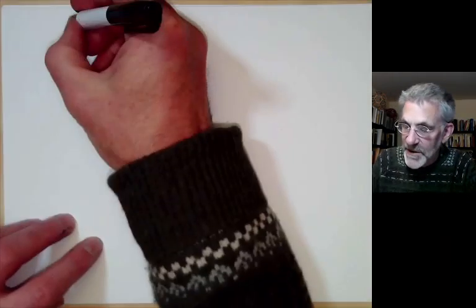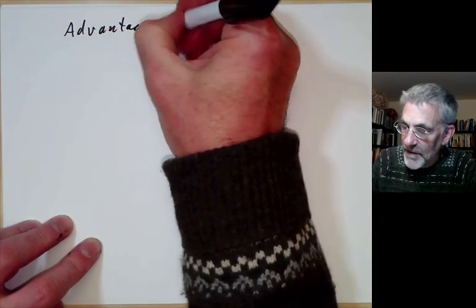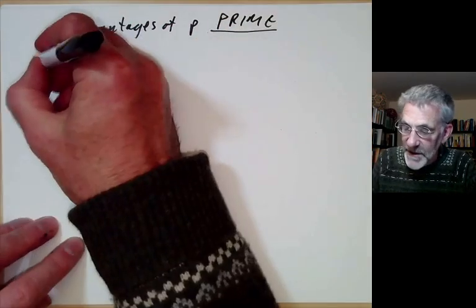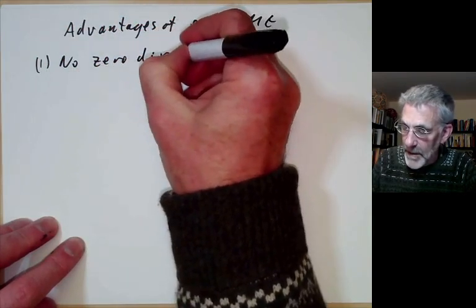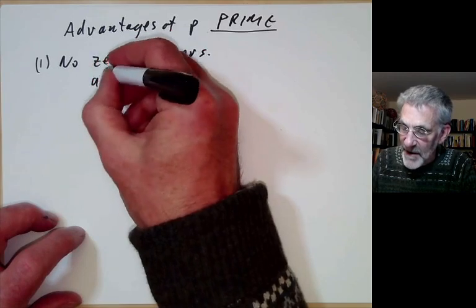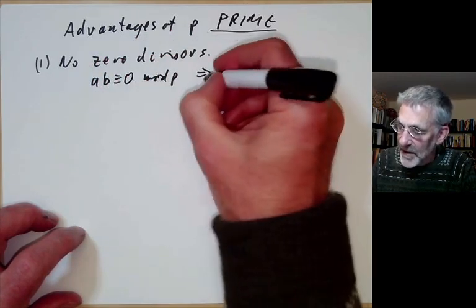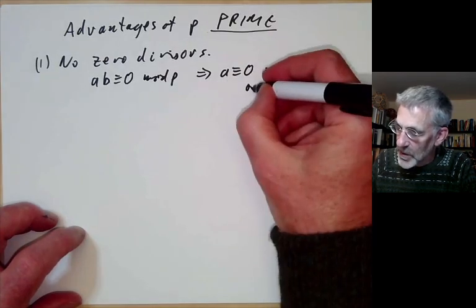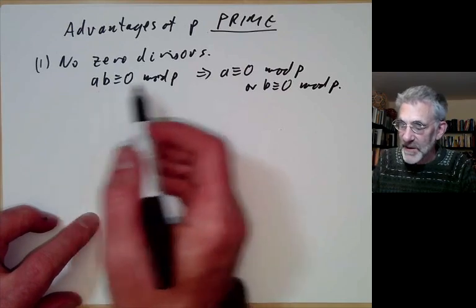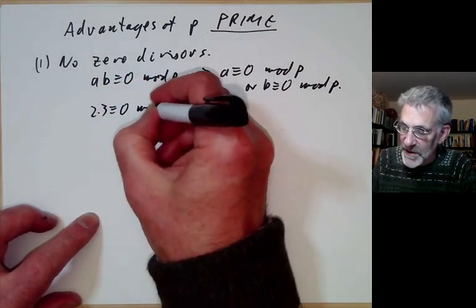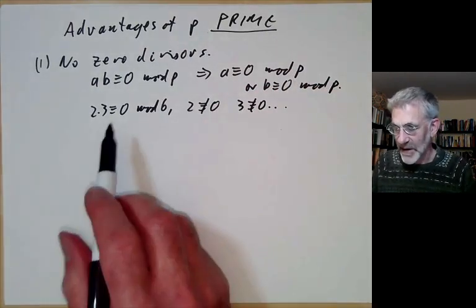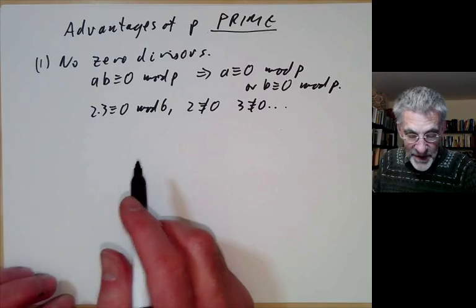Let's look at some advantages of p being prime as opposed to an arbitrary modulus. The first example is there are no zero divisors — something that divides zero but isn't zero. This means if a·b ≡ 0 mod p, then either a ≡ 0 or b ≡ 0 mod p. This definitely fails if p is not prime: for instance, 2×3 ≡ 0 mod 6, but neither 2 nor 3 is congruent to zero mod 6.